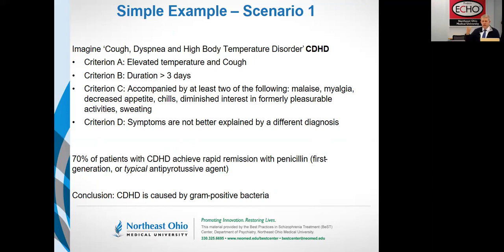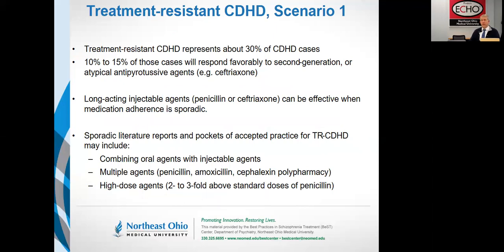Then serendipitously we find this stuff called penicillin. We call it a pyrotussive agent — a typical pyrotussive, being the first one discovered. And it makes a lot of people better. So we would conclude that our disease, CDHD, is caused by what the drug penicillin works on, which is to kill gram-positive bacteria. A victory for science. But then it turns out that maybe about 30% of people with CDHD are not getting better with penicillin.